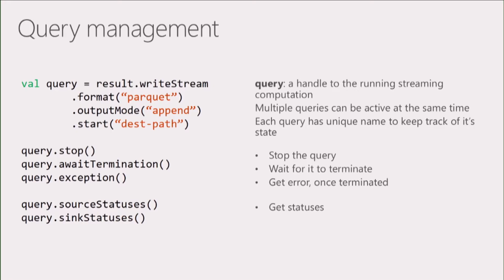In the past, streaming required separate StreamingContexts that were hard to manage. Now Spark gains knowledge of all streaming pipelines within a single SparkSession. You can create as many streaming queries as you like, all visible within the Spark context. When you start a streaming process, you get a query object to manage it — stop it, check its status, see exceptions, and so on.